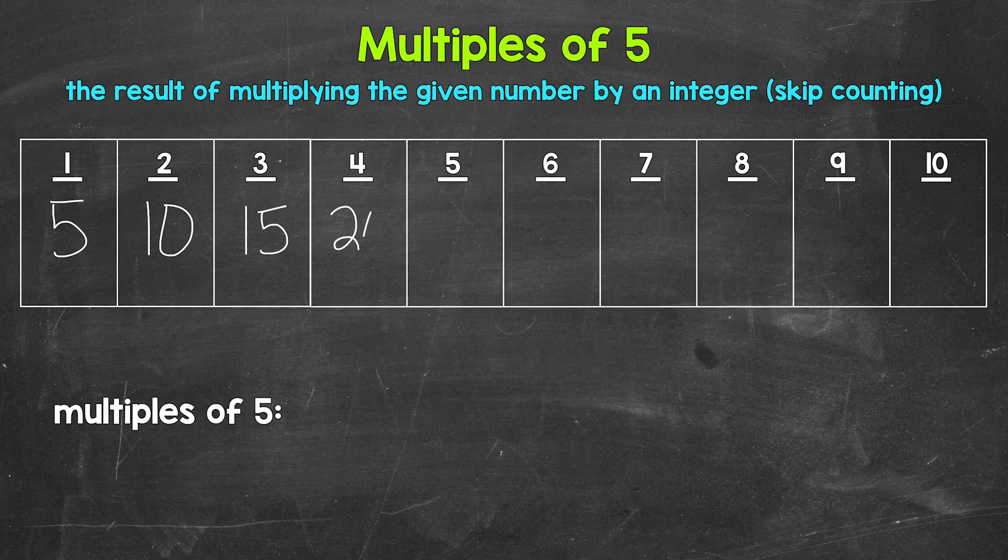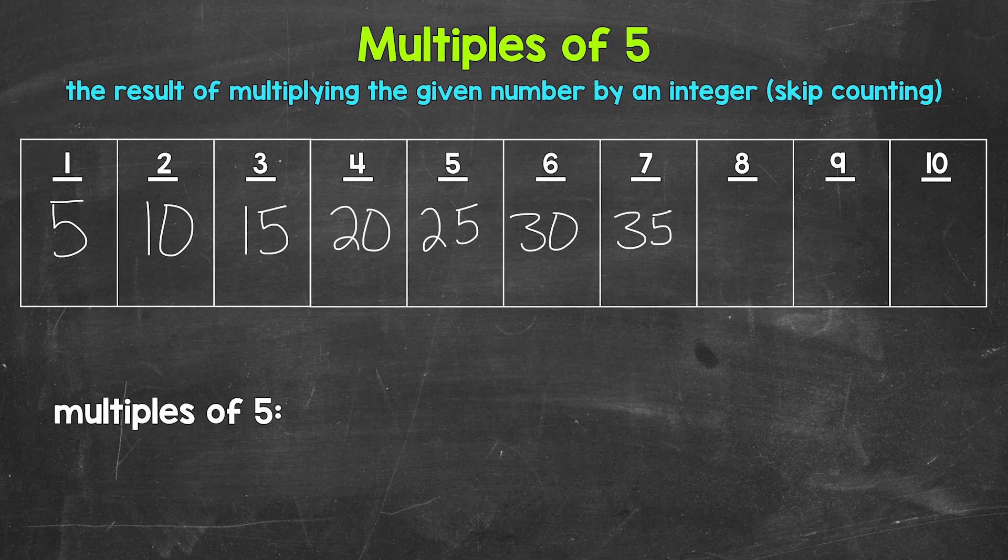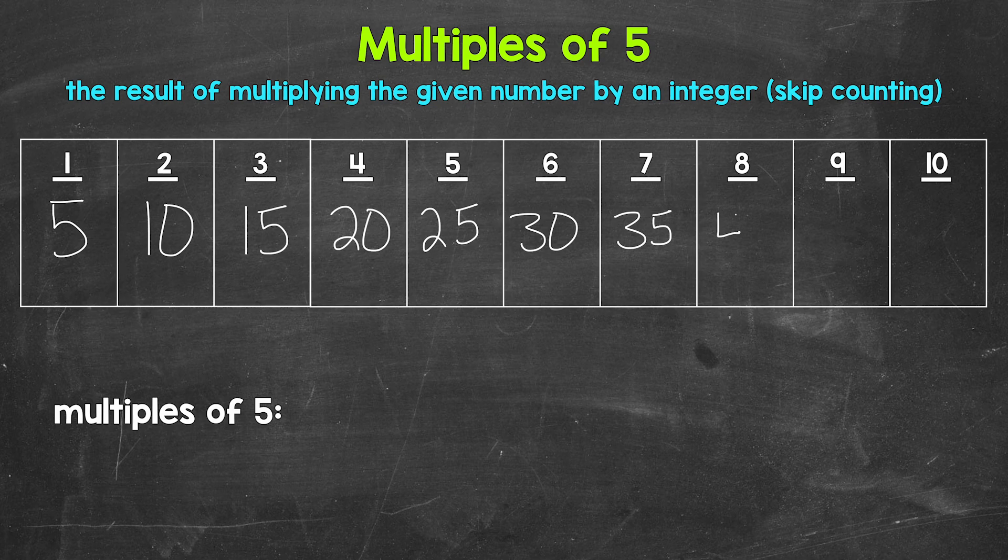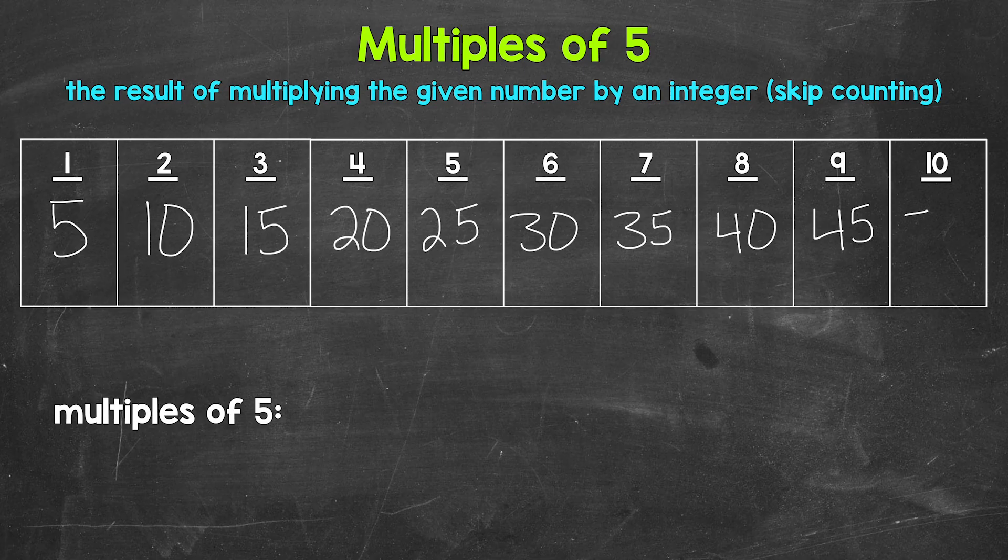4 times 5 is 20. 5 times 5 is 25. 6 times 5 is 30. 7 times 5 is 35. 8 times 5 is 40. 9 times 5 is 45. And 10 times 5 is 50. And those are the first 10 multiples of 5.